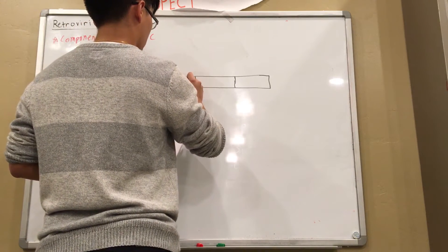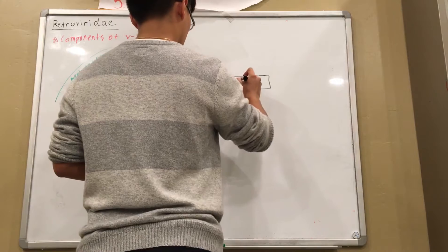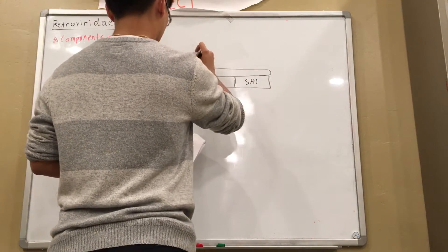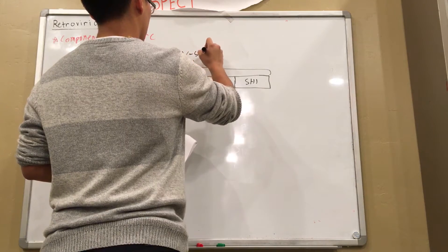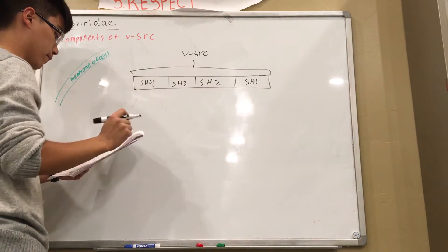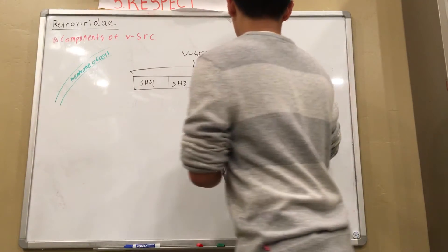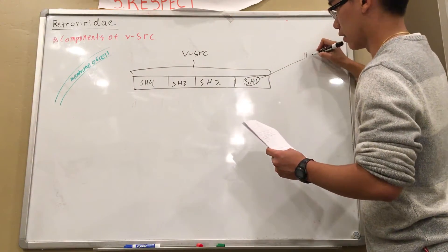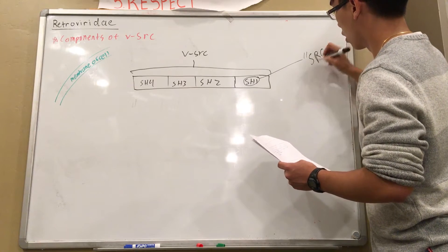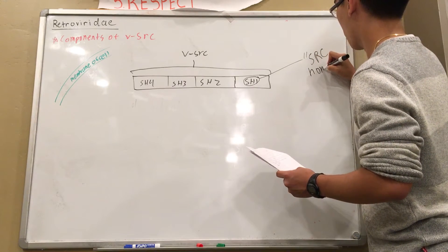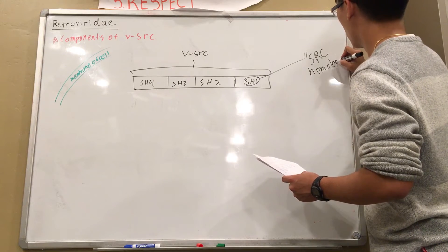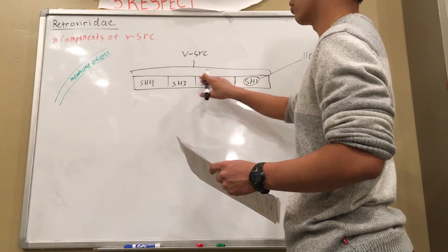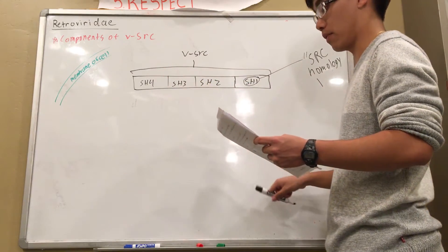SH4, SH3, SH2. This is the V-SARC gene with its domains.